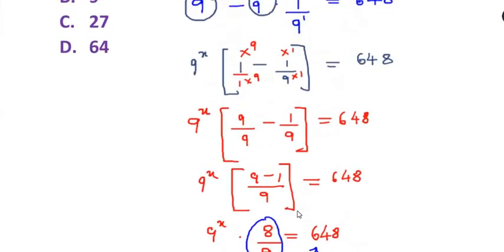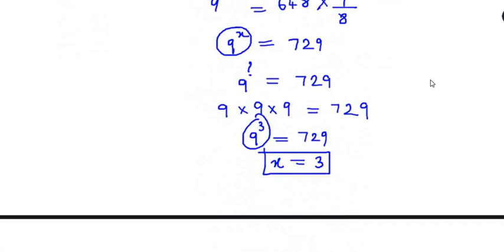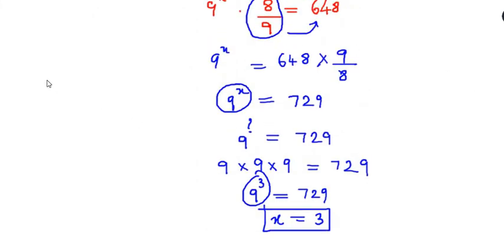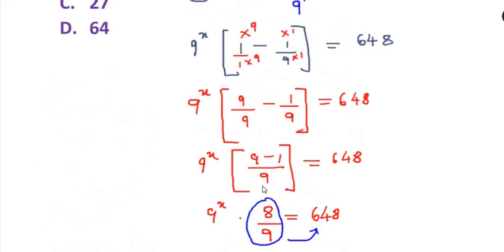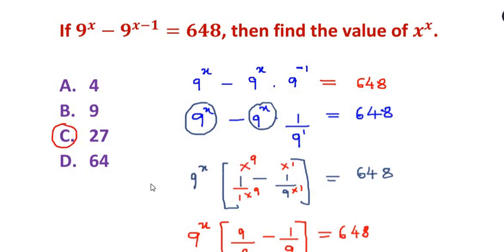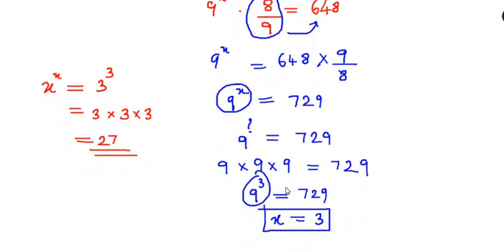But the question is not asking for x — it's asking for x to the power of x. Since x equals 3, we compute 3 to the power of 3, which is 3 times 3 times 3, giving us 27. So the answer is 27, which is option C. I hope you understood and liked the video. Thanks for watching.